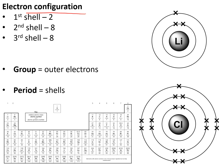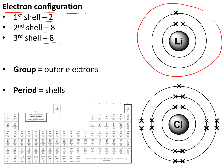Electron configuration tells us how electrons are arranged around an atom — in shells. The first shell can hold 2 electrons, the second 8, and the third also 8. Lithium has 3 electrons in total: 2 in the first shell and 1 in the second, written as 2.1. Chlorine has 17 electrons: 2 in the first shell, 8 in the next, and 7 in the final shell, written as 2.8.7. The group number tells us the number of electrons in the outer shell — lithium is in group 1 with 1 outer electron, chlorine is in group 7 with 7 outer electrons.